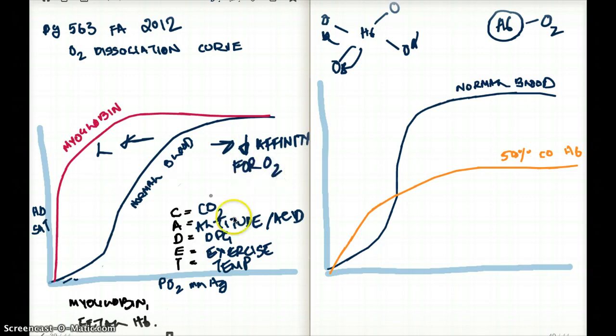And the opposite is going to happen when it's going to move to the left. There is going to be increased affinity for oxygen. Now some factors, for example fetal hemoglobin, has very high affinity for oxygen. So that's why curve to the left is going to be seen in fetal hemoglobin, and the curve will shift to the left.